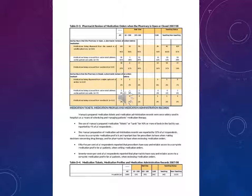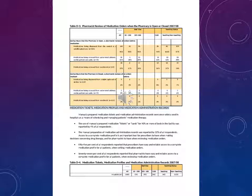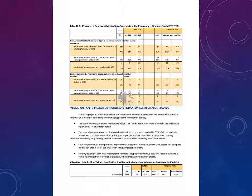During hours that the pharmacy is open, pharmacist medication review covers medications being dispensed from the central or a satellite pharmacy (n=165) and medications being accessed from automated cabinets on the patient care units (n=73). When the pharmacy is closed, pharmacist review covers medications being dispensed from a night cupboard (n=159) and medications being accessed from automated cabinets on the patient care units (n=79), as well as ward stock, medication tickets, medication profiles, and medication administration records.